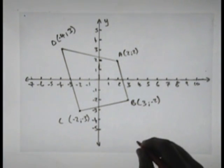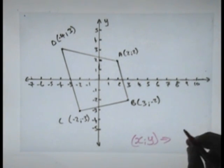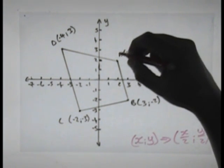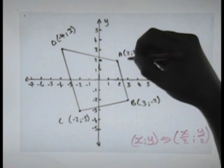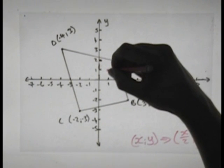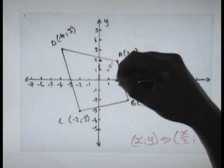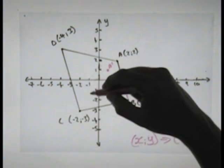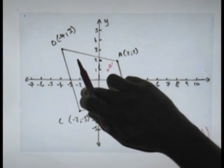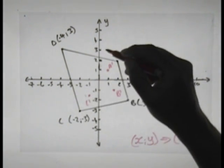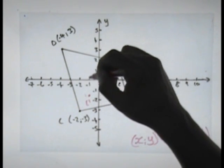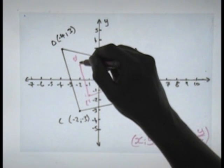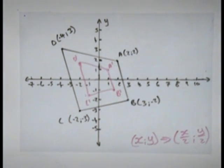The last contraction is (x, y) → (x/2, y/2). The new x value of A is 1, and the y value is also 1. New B has x=1.5, y=-1. New C is at (-1, -1.5). New D has x=-2, y=1.5. That means our new shape looks like that — and that is a contraction.